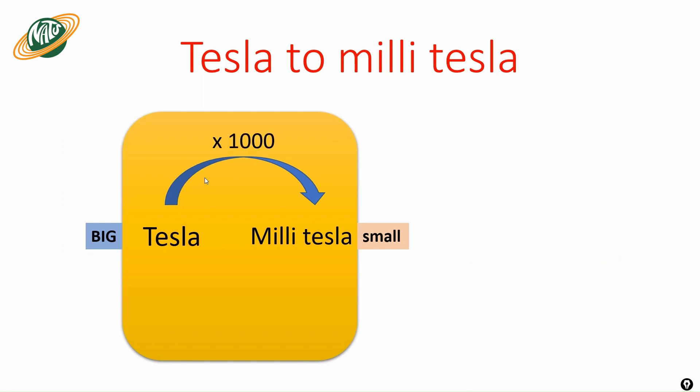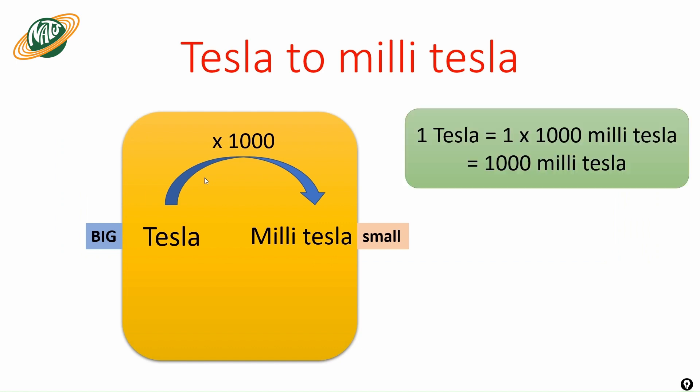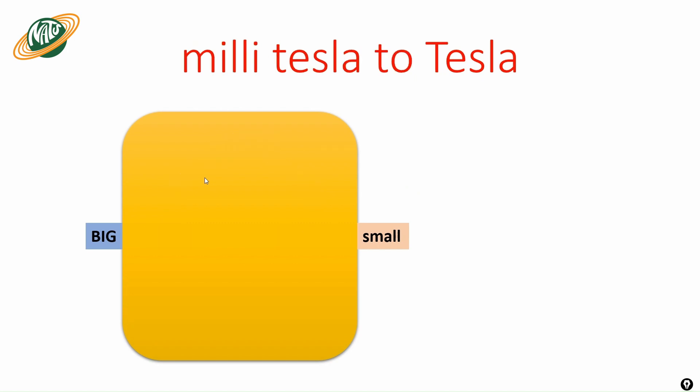To convert bigger unit to smaller unit, you multiply by one thousand. So one tesla is equal to one times one thousand millitesla — that is nothing but one thousand millitesla. So one tesla equals one thousand millitesla.